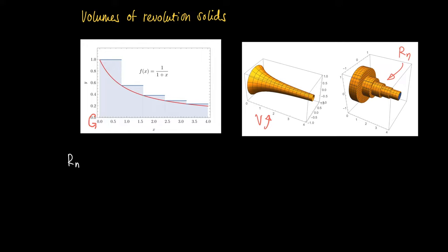We cut up using the rectangles which are used in the Riemann sums, rotate those around the x-axis, and then we get Rn.